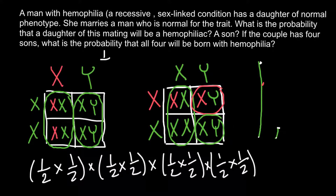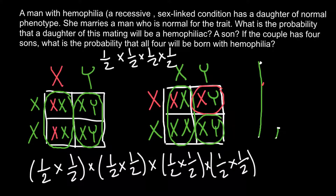The second variant is: the probability that the first boy is hemophiliac is one half, the second boy is also one half, the third one half, and the fourth one half. So which way of calculation is correct — variant one or variant two? You may put your answer in the comment box.